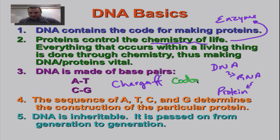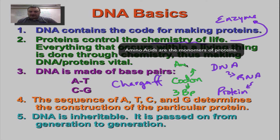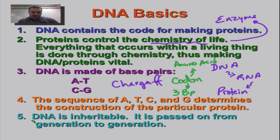Remember such things as a codon, which would be three base pairs on DNA and RNA. One codon equals one amino acid. Just a bunch of review back from chapters 12 and 13. But one thing that this chapter is specifically about is that DNA is inheritable — you can pass this on from parent to offspring.